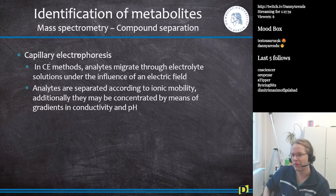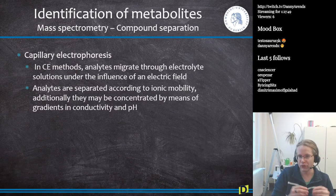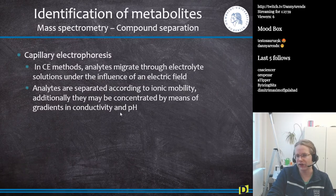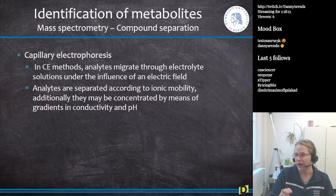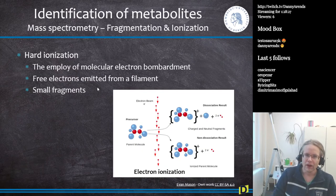Capillary electrophoresis is a method in which an electrolyte solution — a solution with an intrinsic charge — is moved through a very small capillary tube using an electric field, separating compounds according to their ionic mobility. Additionally, compounds may be concentrated by gradients in conductivity and pH. The key feature is the very small tube, and the substance of interest is fed in and pulled through using electrophoresis.